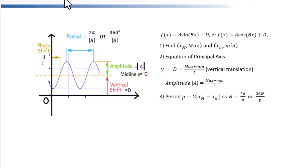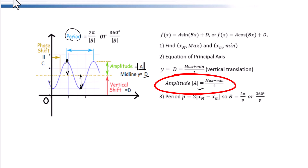Normally on the graph, you are given maximum and minimum points. Use the coordinates of maximum and minimum points. We can figure out amplitude, midline, and also the period. We know amplitude is the distance between midline and the maximum point. In other words, it's half the distance between maximum and minimum points. Amplitude equals maximum minus minimum over 2.